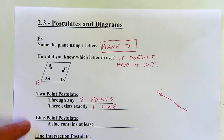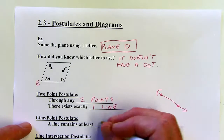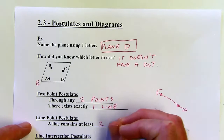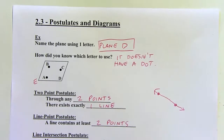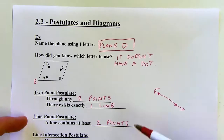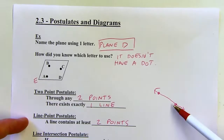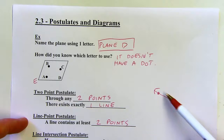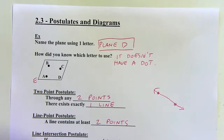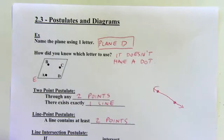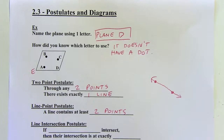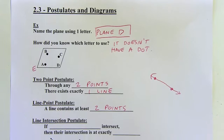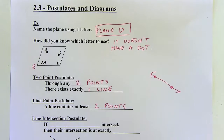The line-point postulate says a line contains at least two points. It contains many more than two points, so I'm not entirely sure how that's useful, but it's in the book. That's the line-point postulate.